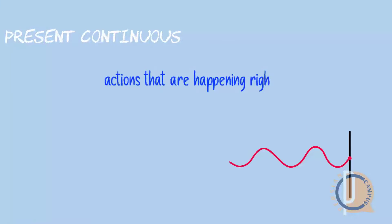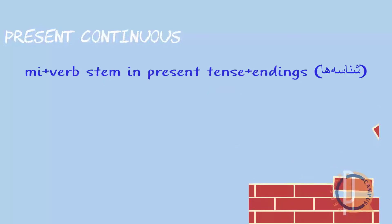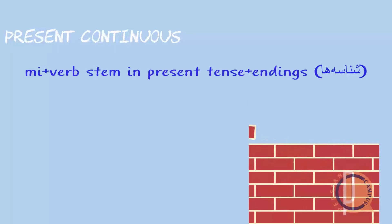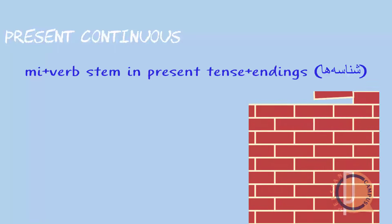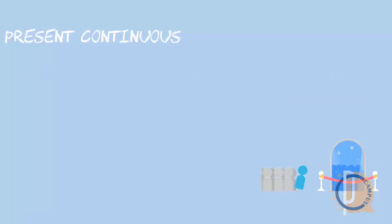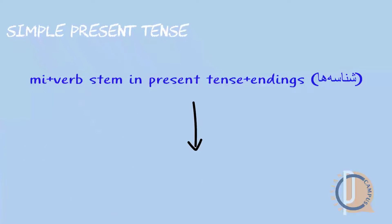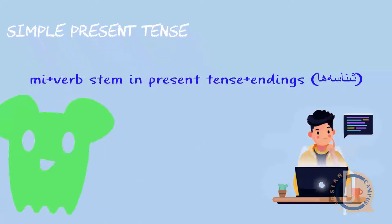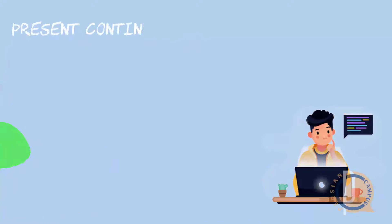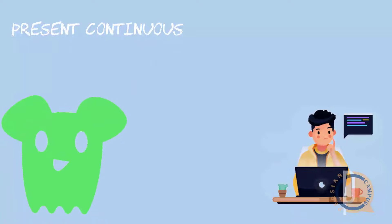We use present continuous for actions that are happening right now. For hundreds of years, the construction of present tense introduced in lesson 9 was used to indicate continuous. Around 100 years ago, a new construction entered Persian which changed the grammar a little bit. The 'mi + verb + endings' form, which originally marked present continuous, is now used for simple present tense — because a new form started showing present continuous, and the language didn't need two forms for one role.